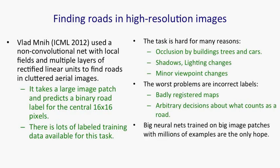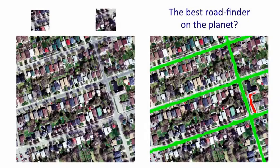Big neural nets trained on big image patches using millions of examples are the only real hope for doing a good job of this task. Here's what the data looks like — this is a part of Toronto. Two patches extracted from the image show it's not trivial to identify road pixels. On the right is the output of Vlad Mnih's system: green is correctly identified road pixels, and red means things his system thought might be road that actually aren't — one such area is a parking lot, but you can see why he might have thought it was a road.